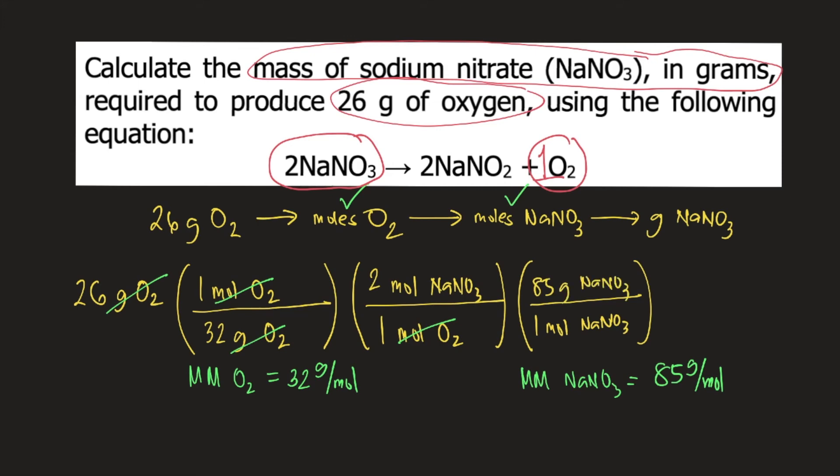Moles of NaNO3 will cancel and your final unit would be grams of NaNO3. Now the last thing to do is to plug all the numbers into your calculator. And you will get the answer equal to 138.125 grams of NaNO3. And that is the answer to the question.